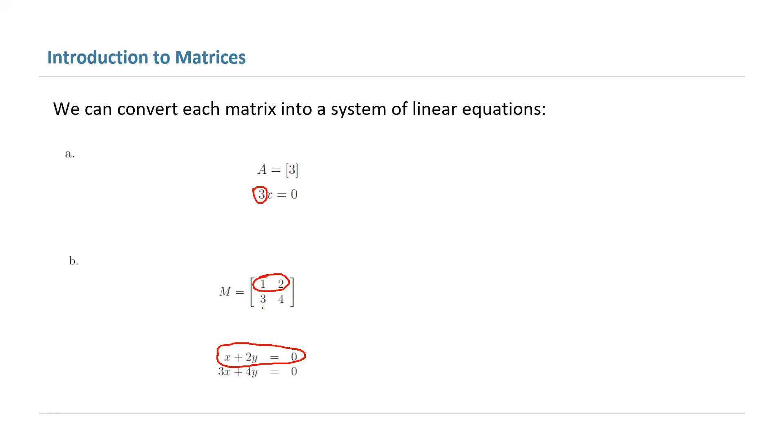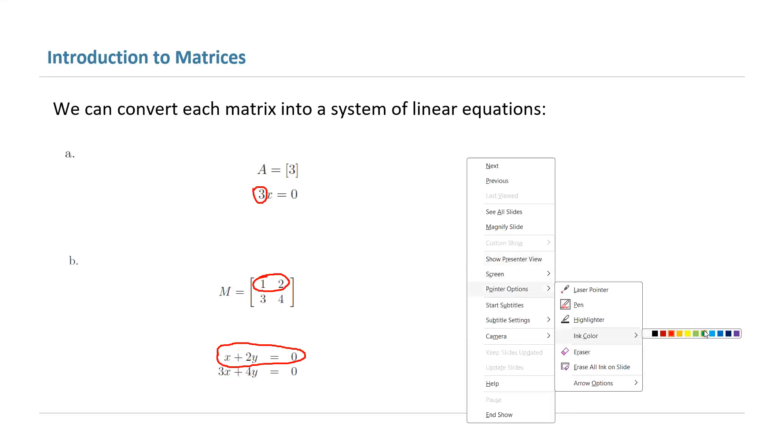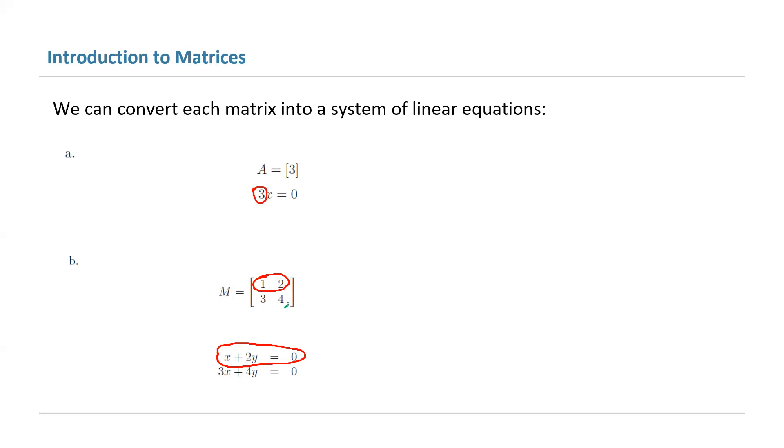The second row includes 3 and 4. We can take the second row and form the second equation as 3x plus 4y equal to 0.